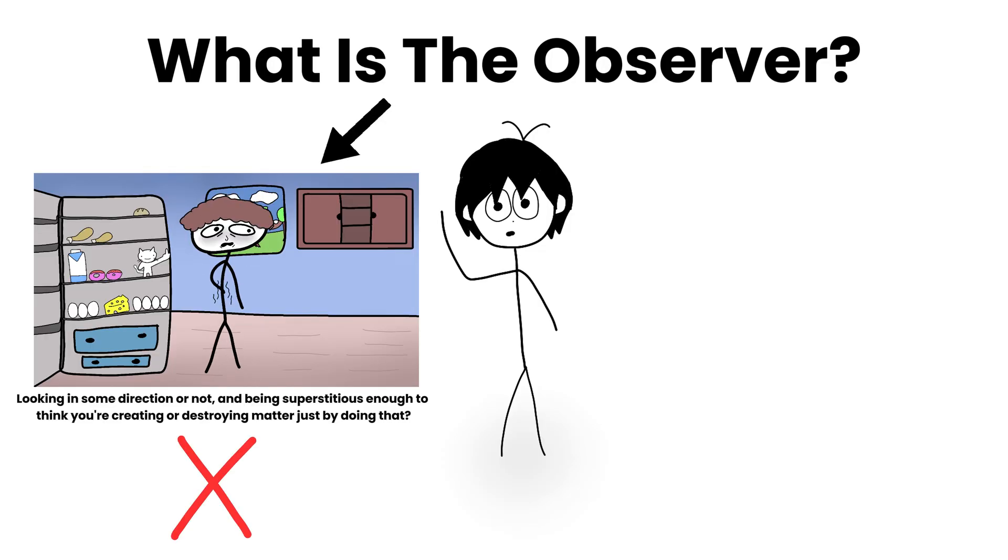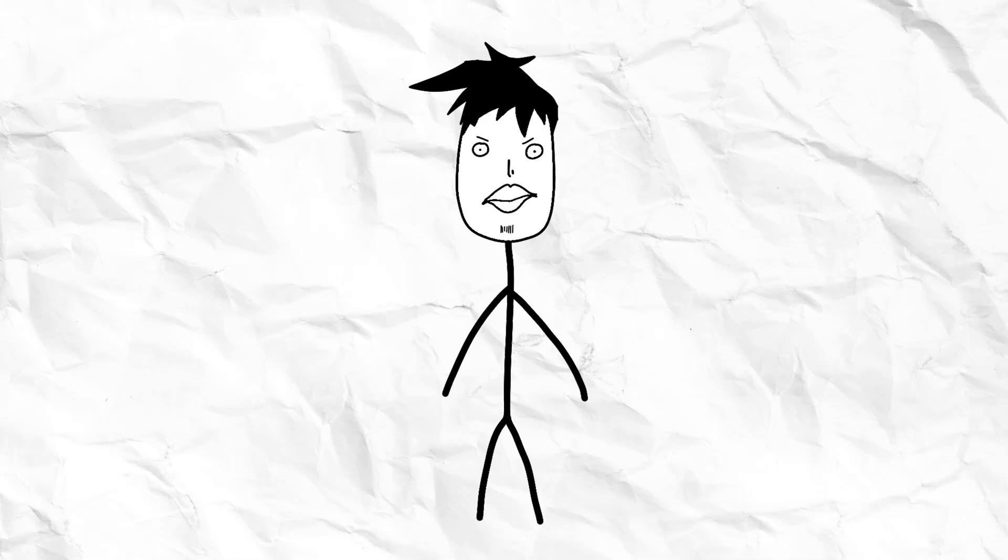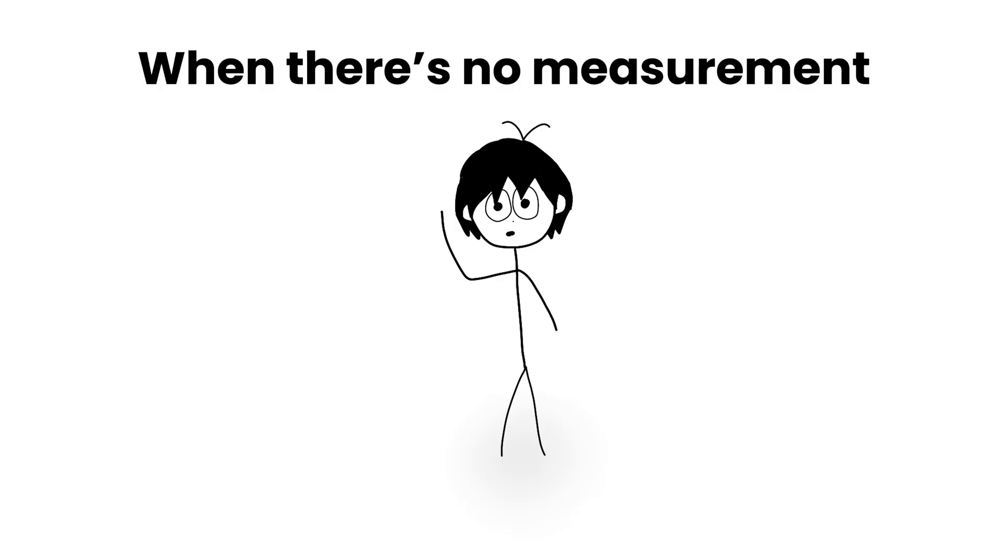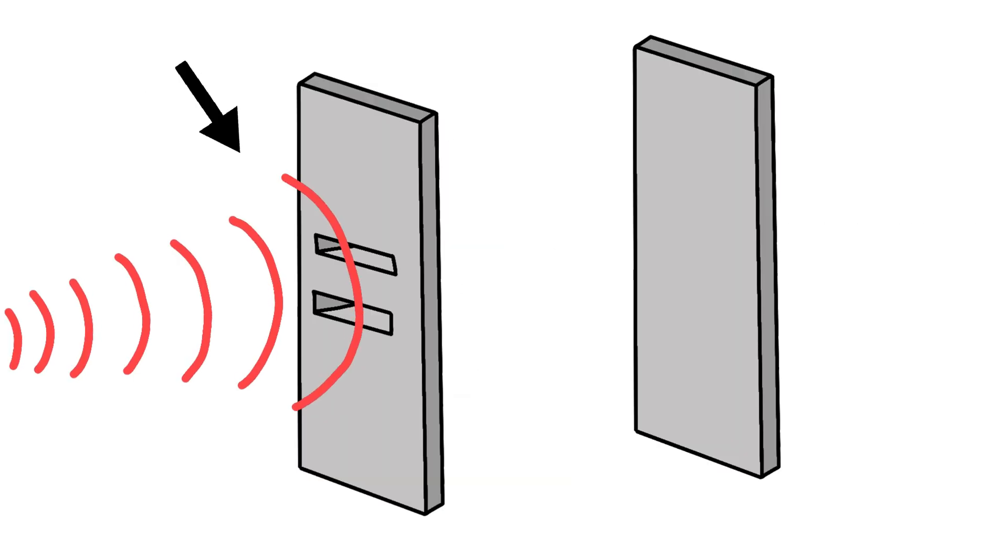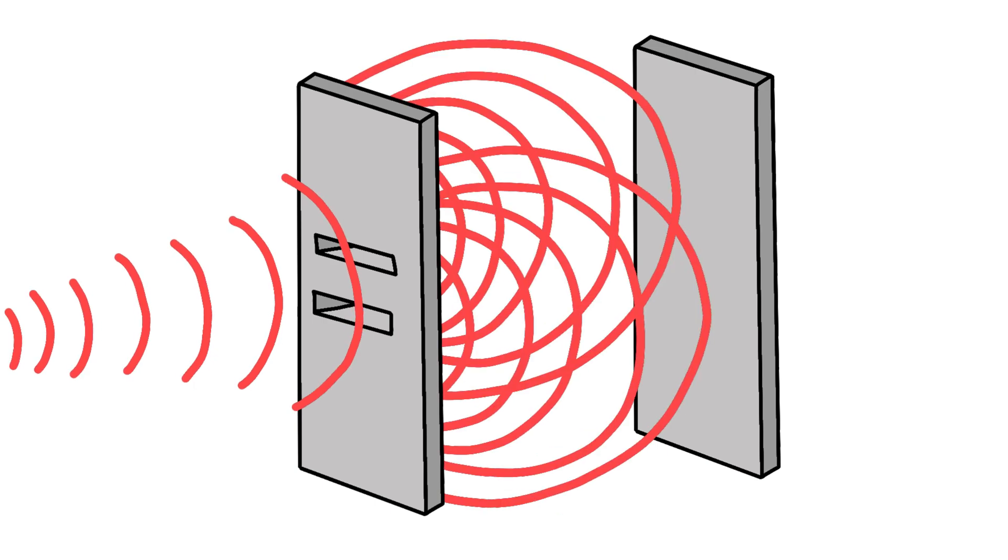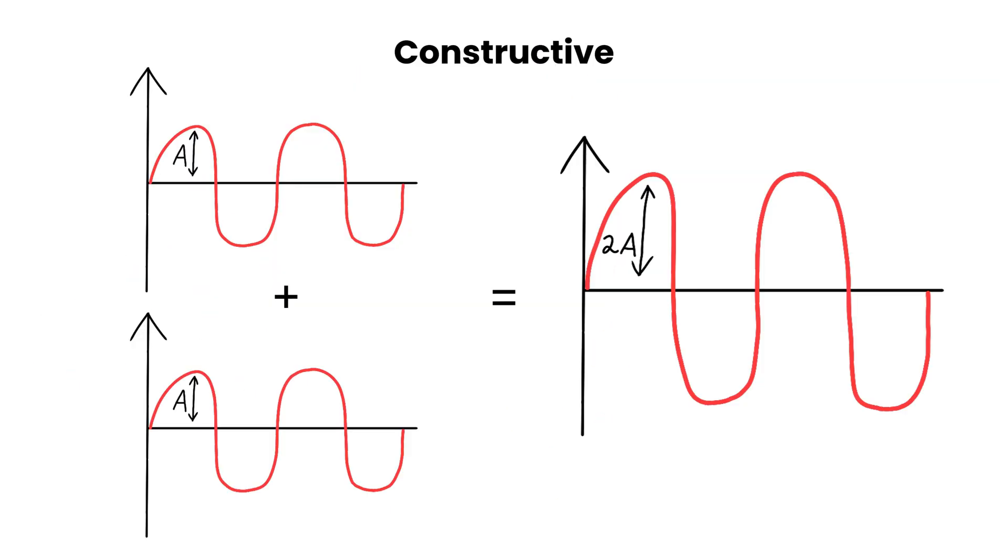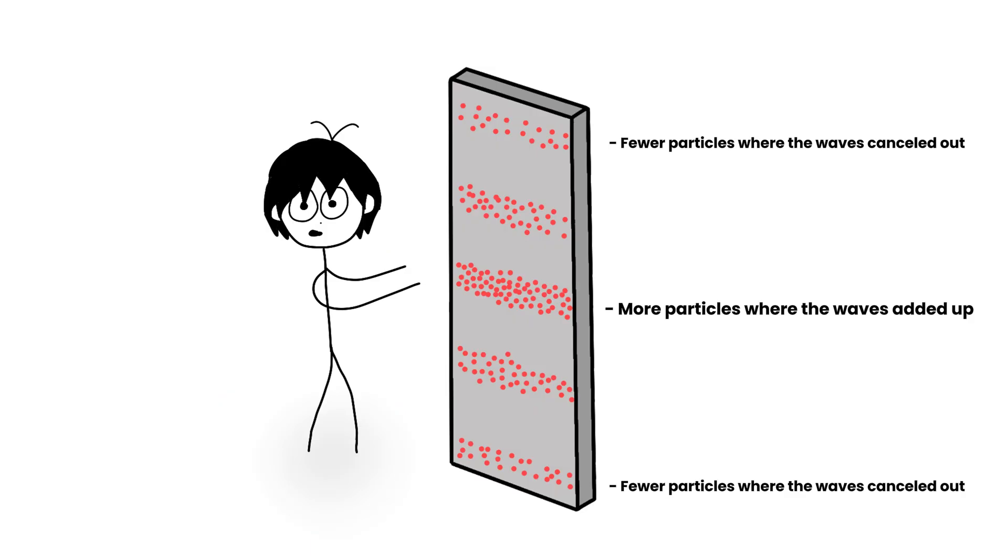In practice, the observer is nothing more than the thing that interferes with the system. It doesn't matter if it's a living being or machine shooting photons to measure particles. When there's no measurement, meaning no interference, the particle in superposition passes through the slits as a wave. That wave interferes with itself, creating what's called an interference pattern. In some areas, the waves add up. In others, they cancel out, creating that weird-looking pattern on the screen.